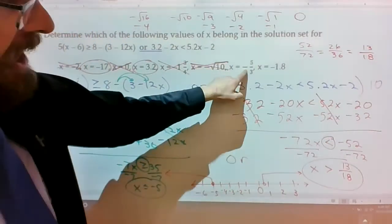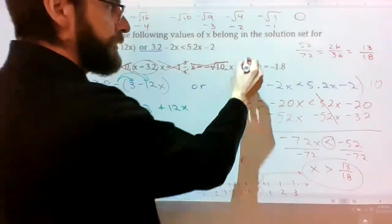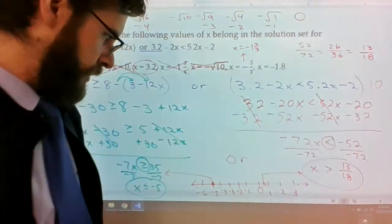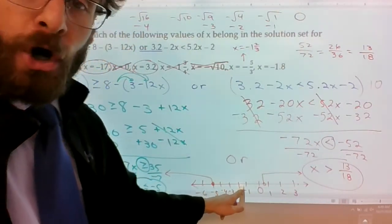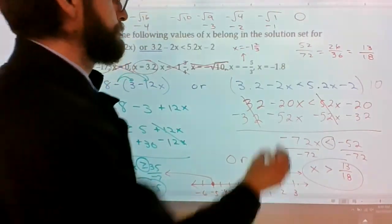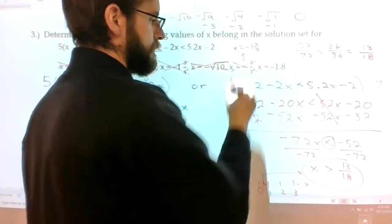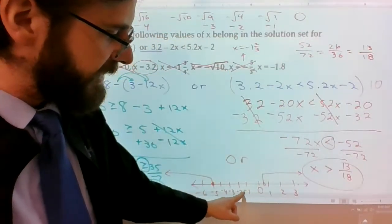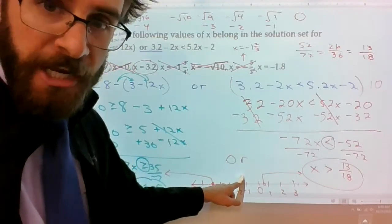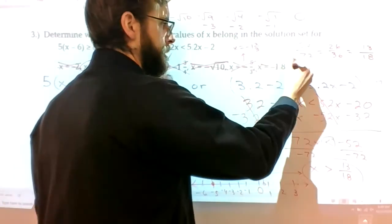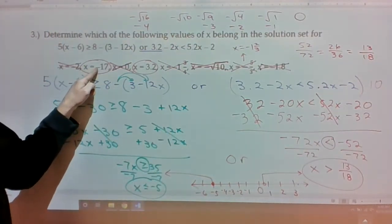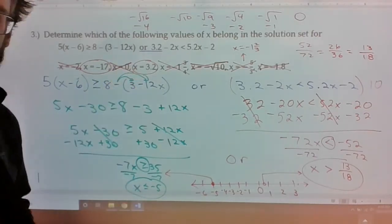And then negative 1.8, again, it's between negative 1 and negative 2, which is not in the shaded region. So the only solutions that actually live in this are going to be x equals negative 17 and x equals 3.2.